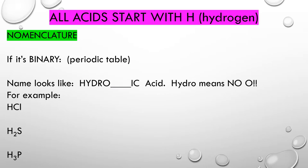This is super important. All acids start with H. They all start with a hydrogen atom — hydrochloric acid, hydrosulfuric acid, hydrophosphoric acid. Every acid has an H as its cation.